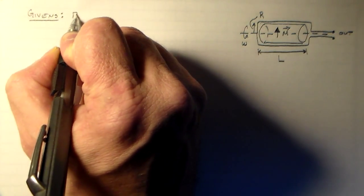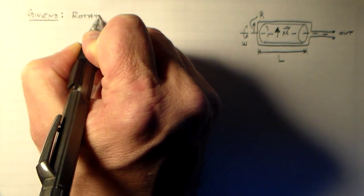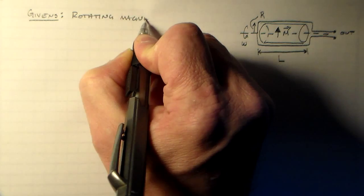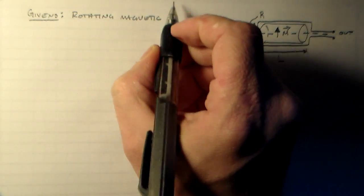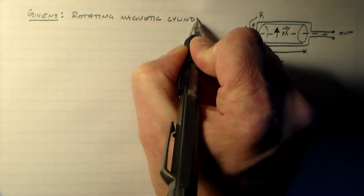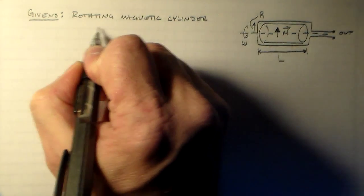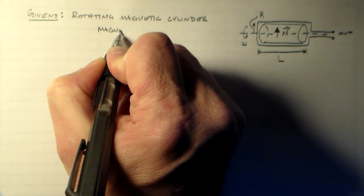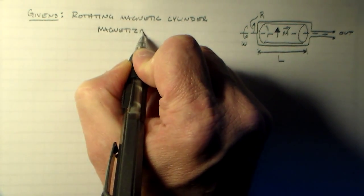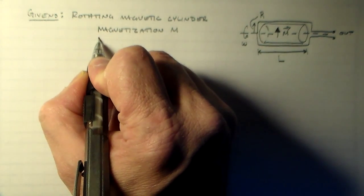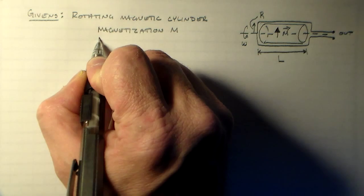And what am I given? I'm given a rotating magnetic cylinder. It's a permanent magnet, one of these ideal permanent magnets that we're using in class. So it has a magnetization M.